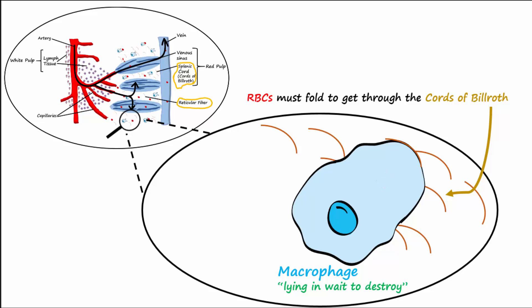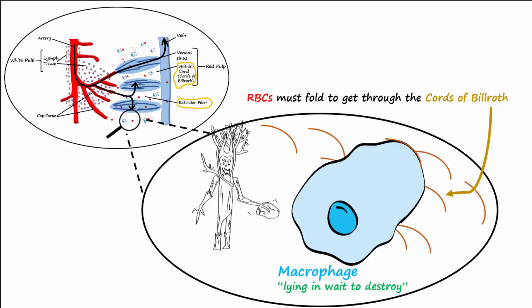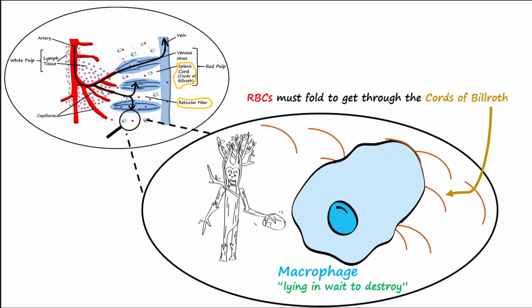If you're a fan of the movie series Lord of the Rings, you may compare this process to the trees of Fangorn Forest destroying the orcs — macrophages. So please, if you're an old red blood cell, don't enter the cords of Billroth, or you will be destroyed.